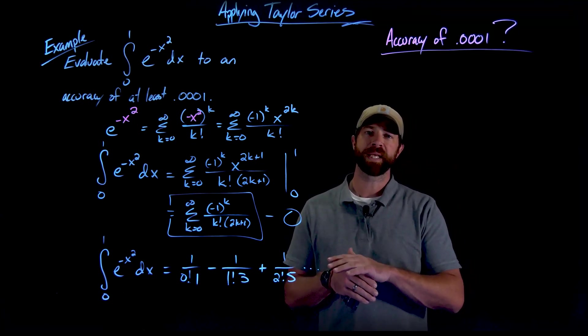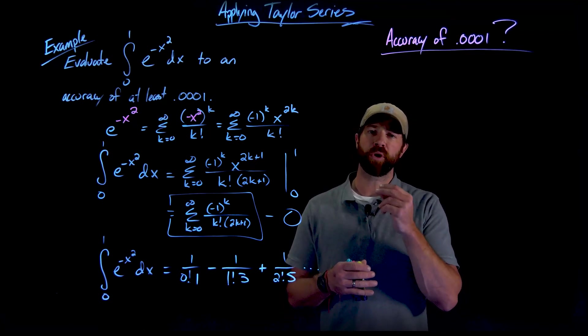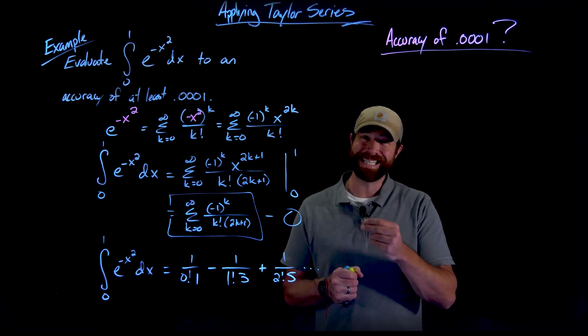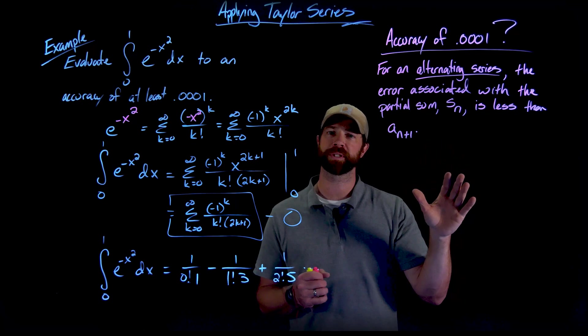The point being, if you're looking for how accurate is the nth partial sum, it's always as accurate of at least the next term. Importantly, this statement is only true for the alternating series.